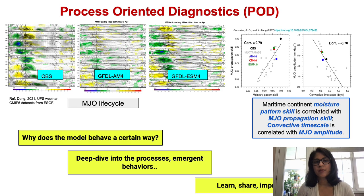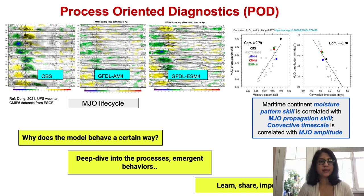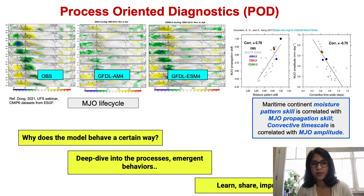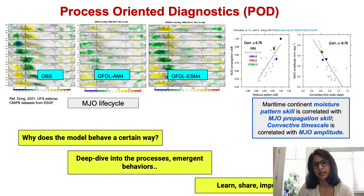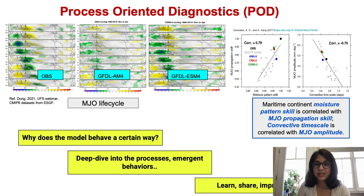Before we talk about the MDTF, the Model Diagnostics Task Force, let's talk process-oriented diagnostics. In this slide, we see the composite lifecycle of the MJO, or the Madden-Julian Oscillation. We see that the MJO amplitude varies across each model compared to the observational datasets, amongst other things. But why is this happening?